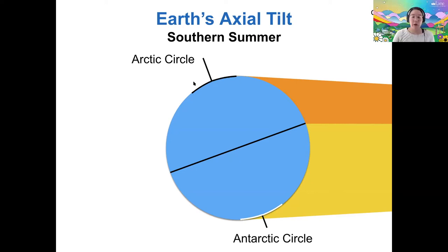The Arctic Circle, meanwhile, is completely dark. So half of the entire sphere is illuminated, but because of that axial tilt, the Arctic Circle is completely out of the sunshine during southern summer.